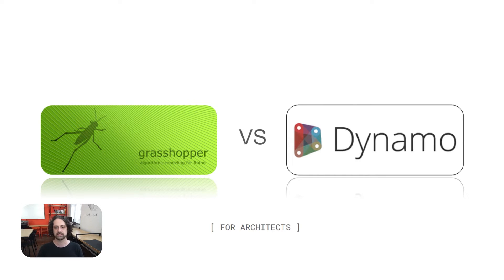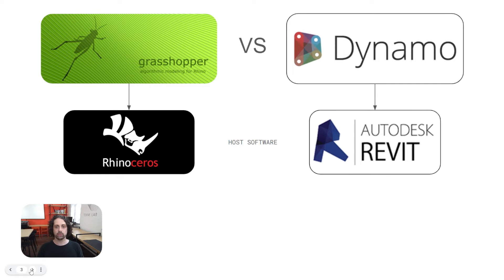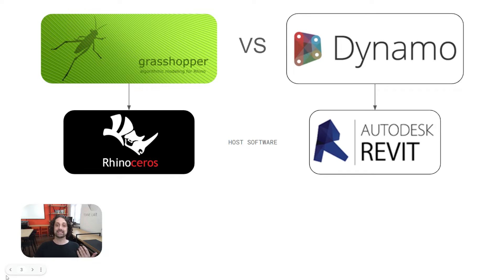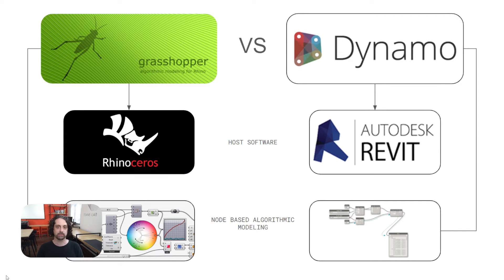To really understand Grasshopper and Dynamo, we need to understand the host software that each of them works in. They're both plugins for two respective programs in the design and architectural industry. Grasshopper is a plugin for Rhinoceros, and Dynamo is a plugin for Revit. The key similarity between these two pieces of software is that they are both node-based algorithmic modeling tools — we are creating relationships between objects, processes, and data, and using this to drive changes within the host program.